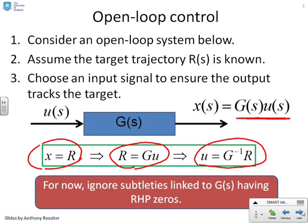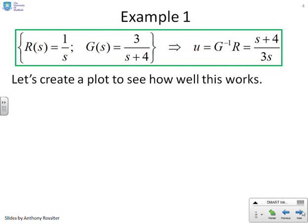Here's an example. We're going to do exactly the process we've just suggested. We've said u equals G inverse r. So if G equals 3 over s plus 4 and r is a unit step 1 over s, then u is s plus 4 over 3s. What we're going to do now is plot this input signal and plot the corresponding output to the process and see if it worked.